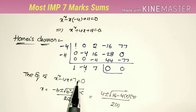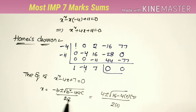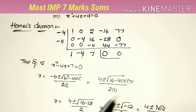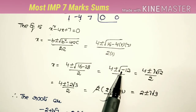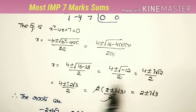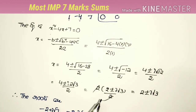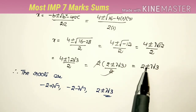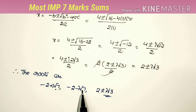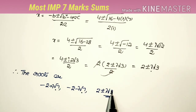Since x² - 4x + 7 = 0 has no real factors, we apply the quadratic formula with a=1, b=-4, c=7: x = (4 ± √(16-28)) / 2 = (4 ± √(-12)) / 2. Since √(-12) = i·2√3, taking 2 common gives x = 2 ± i√3. Therefore the four roots are -2+i√7, -2-i√7, 2+i√3, and 2-i√3.